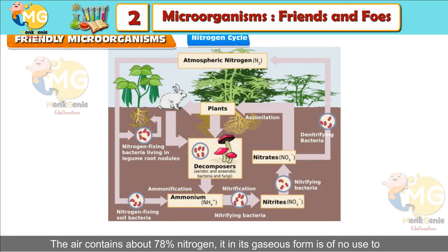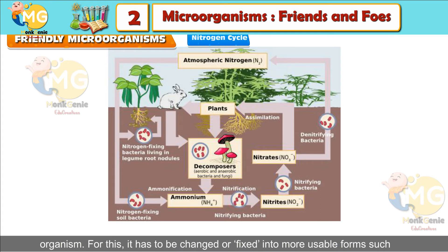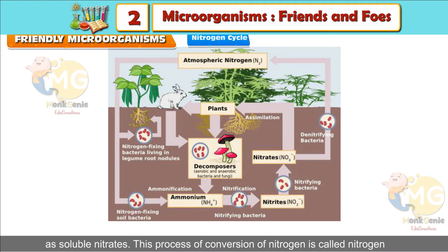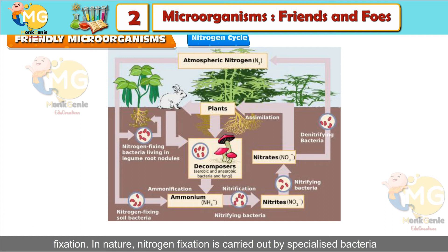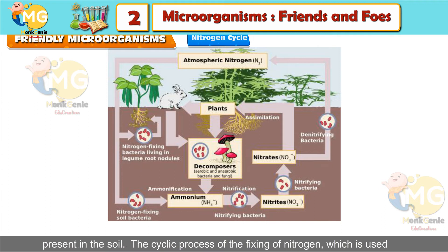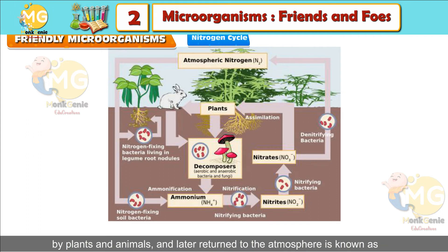Nitrogen Cycle: The air contains about 78% nitrogen. In its gaseous form, it is of no use to organisms. For this, it has to be changed or fixed into more usable forms, such as soluble nitrates. This process of conversion of nitrogen is called nitrogen fixation. In nature, nitrogen fixation is carried out by specialized bacteria present in the soil. The cyclic process of fixing nitrogen — used by plants and animals and later returned to the atmosphere — is known as the nitrogen cycle.